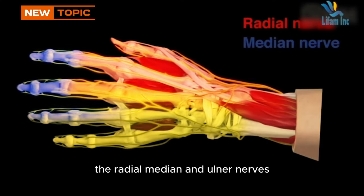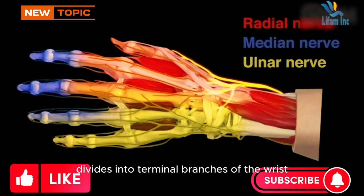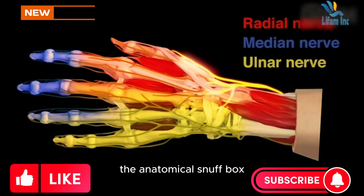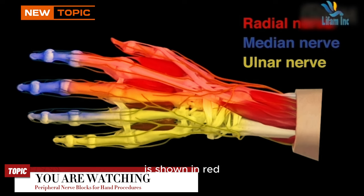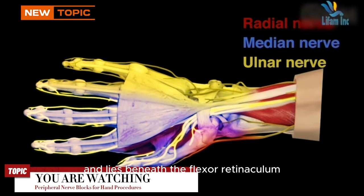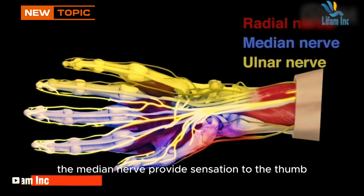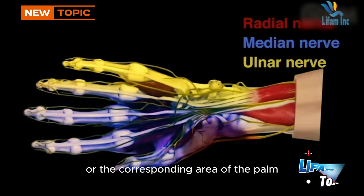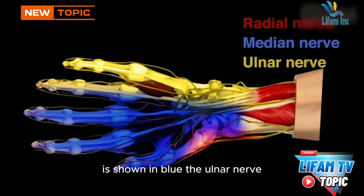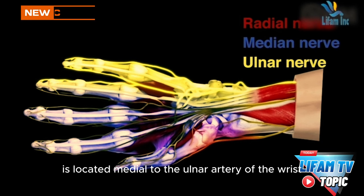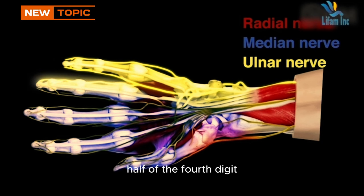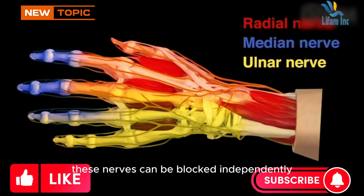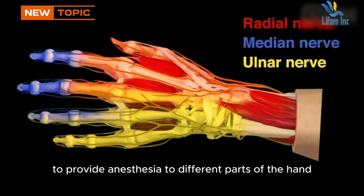Three nerves innervate the hand: the radial, median, and ulnar nerves. The superficial branch of the radial nerve divides into terminal branches at the wrist and provides sensation to the dorsal surface of the wrist, the radial styloid, and the anatomical snuff box. The median nerve lies beneath the flexor retinaculum in the carpal tunnel and provides sensation to the thumb, index finger, middle finger, and half of the ring finger. The ulnar nerve is located medial to the ulnar artery at the wrist and provides sensation to the entire fifth digit, half of the fourth digit, and the medial aspect of the hand and wrist. These nerves can be blocked independently or together to provide anesthesia to different parts of the hand.